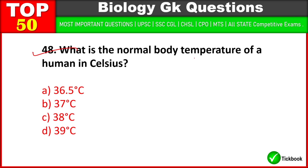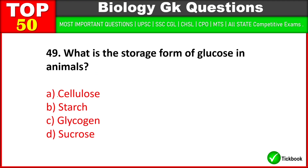What is the normal body temperature of a human in celsius? B is the right answer: 37 degrees celsius. What is the storage form of glucose in animals? C is the right answer: glycogen.